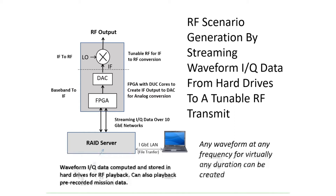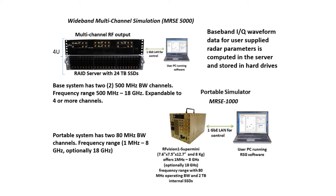Pre-recorded mission data can also be played back from the IQ data stored within the hard drives of the RAID server. The multi-channel radar signal emulation software can be ported to either of two hardware platforms: a wideband platform with two channels and 500 MHz instantaneous bandwidth covering 500 MHz to 18 GHz, expandable to four or more channels; or a portable simulator platform with two 80 MHz instantaneous bandwidth channels covering 1 MHz to 8 GHz, and optionally 18 GHz.